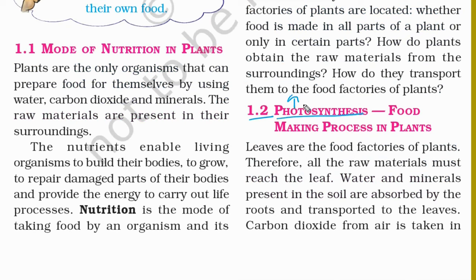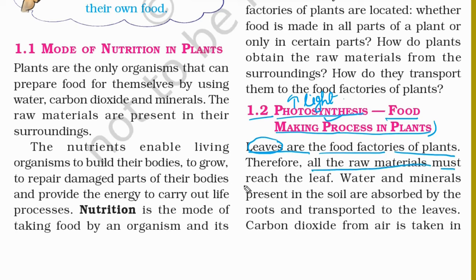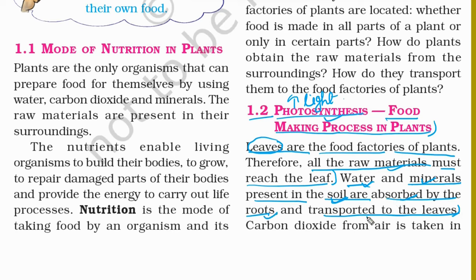Photo means light and synthesis means prepare, so photosynthesis is the process by which plants make their food. Leaves are the food factories of plants. Water and minerals present in the soil are absorbed by the roots and transported to the leaves.